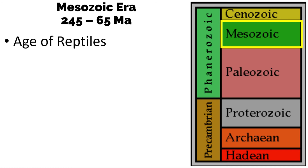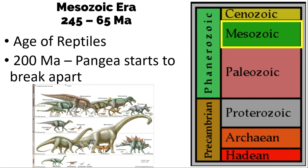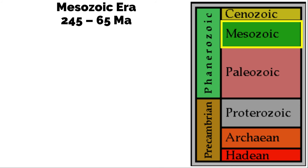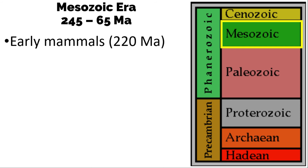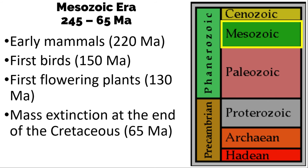Next, we have the Mesozoic Era, called the Age of Reptiles, with dominance of reptiles and dinosaurs. To clarify, the term dinosaurs refers to land reptiles that lived from 230 to 65 MA — it is not used for flying and marine reptiles of the same period. At 200 MA, Pangea starts to break apart. Early mammals appear at 220 MA, the first birds at 150 MA, and the first flowering plants at 130 MA. This era ended with the Cretaceous Extinction at 65 MA, when an asteroid hit the Earth in the Yucatan Peninsula, Mexico, forming what is today the Chicxulub Impact Crater.